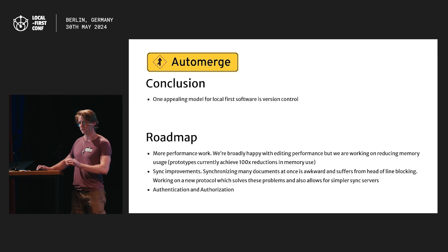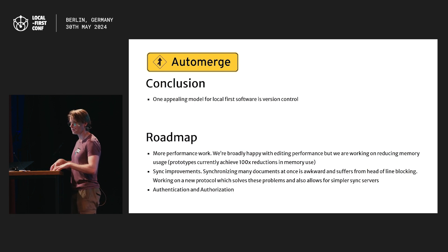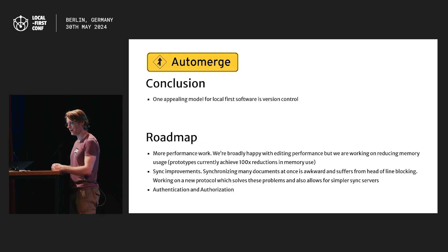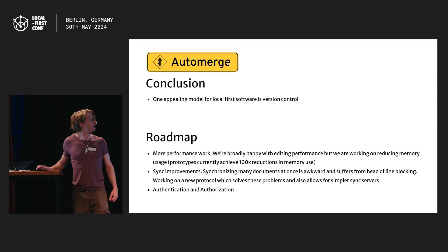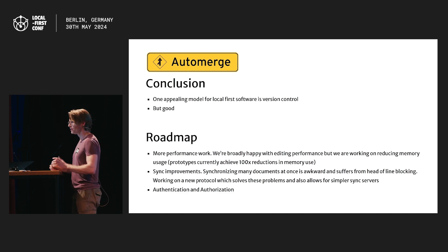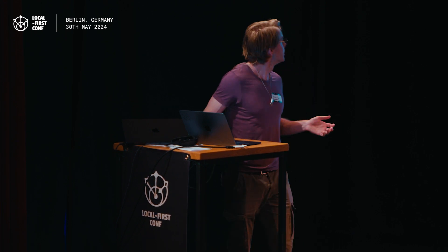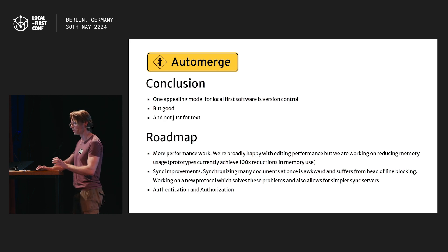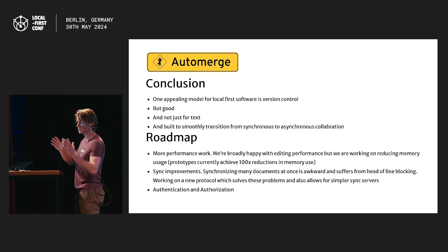Version control is an appealing model for a lot of local-first software. I think it works well in scenarios where most of your users are both reading and writing, you're working on data that moves at human speeds, and it's human-sized — so you don't have partial sync problems. But it has to be good. We think about version control as Git, and exposing Git to non-programmers is not going to make a good product. Git has taught us that version control is difficult, but I don't think it has to be. Building good tools for version control could be really compelling — and not just for text. Most people are working on something more complicated than text, and we want these things to smoothly transition from synchronous to asynchronous collaboration.